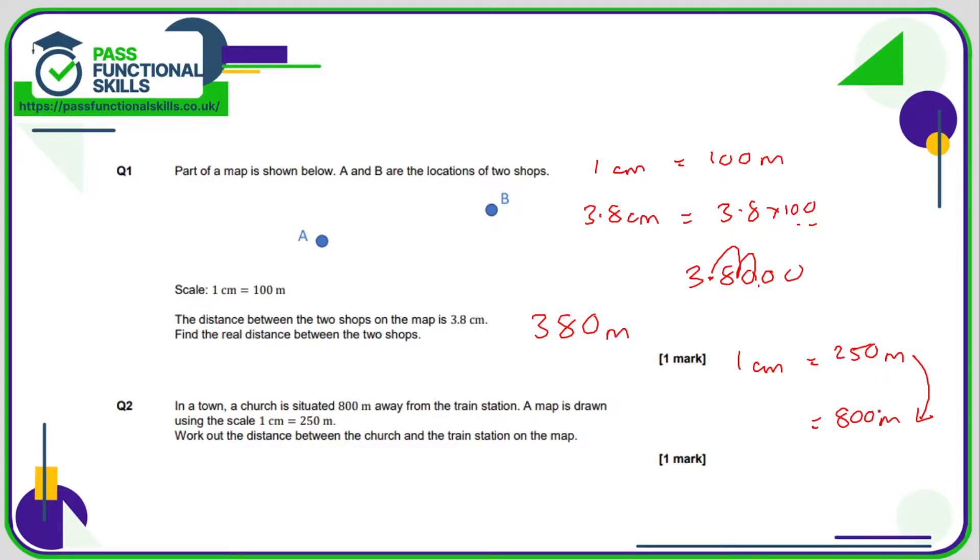250 times what equals 800 is going to be the same as what is 800 divided by 250. 800 divided by 250 is 3.2, so on the right-hand side of this ratio, we're multiplying by 3.2. So if 1 centimeter is 250, then 800 meters is going to be 1 times 3.2 centimeters, which is simply 3.2 centimeters.